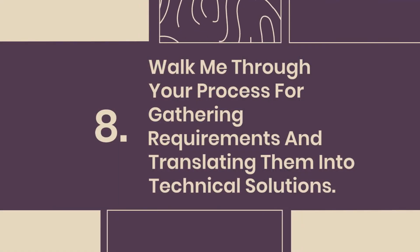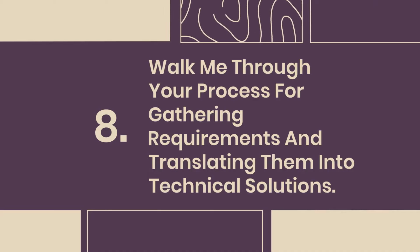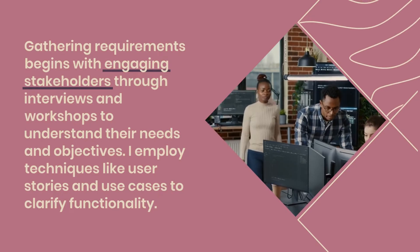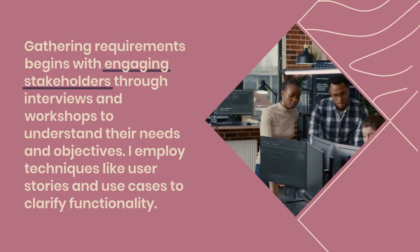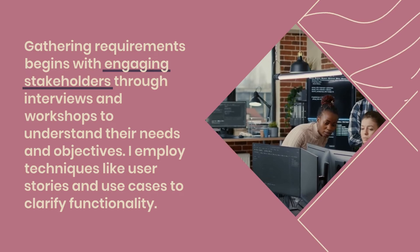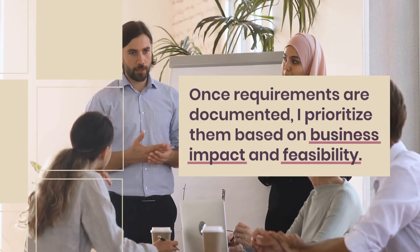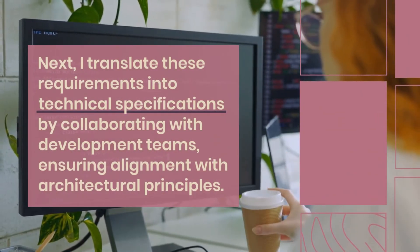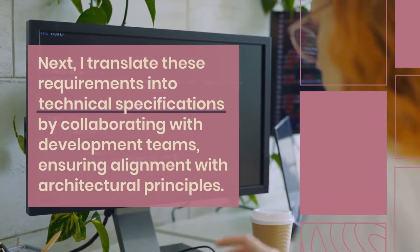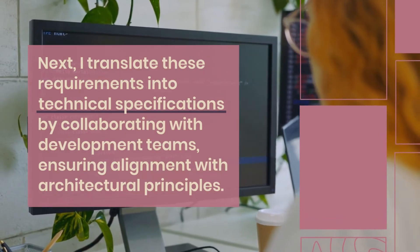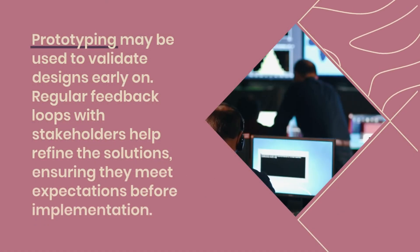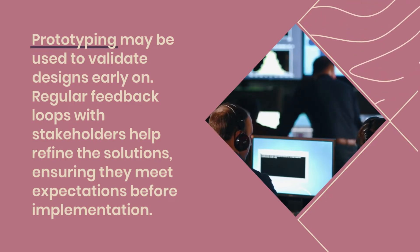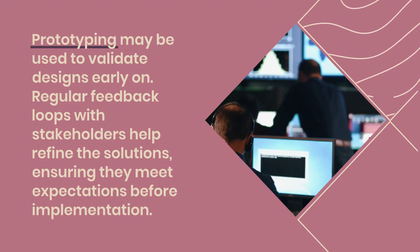Question 8: Walk me through your process for gathering requirements and translating them into technical solutions. Gathering requirements begins with engaging stakeholders through interviews and workshops to understand their needs and objectives. I employ techniques like user stories and use cases to clarify functionality. Once requirements are documented, I prioritize them based on business impact and feasibility. Next, I translate these requirements into technical specifications by collaborating with development teams, ensuring alignment with architectural principles. Prototyping may be used to validate designs early on. Regular feedback loops with stakeholders help refine the solutions, ensuring they meet expectations before implementation.